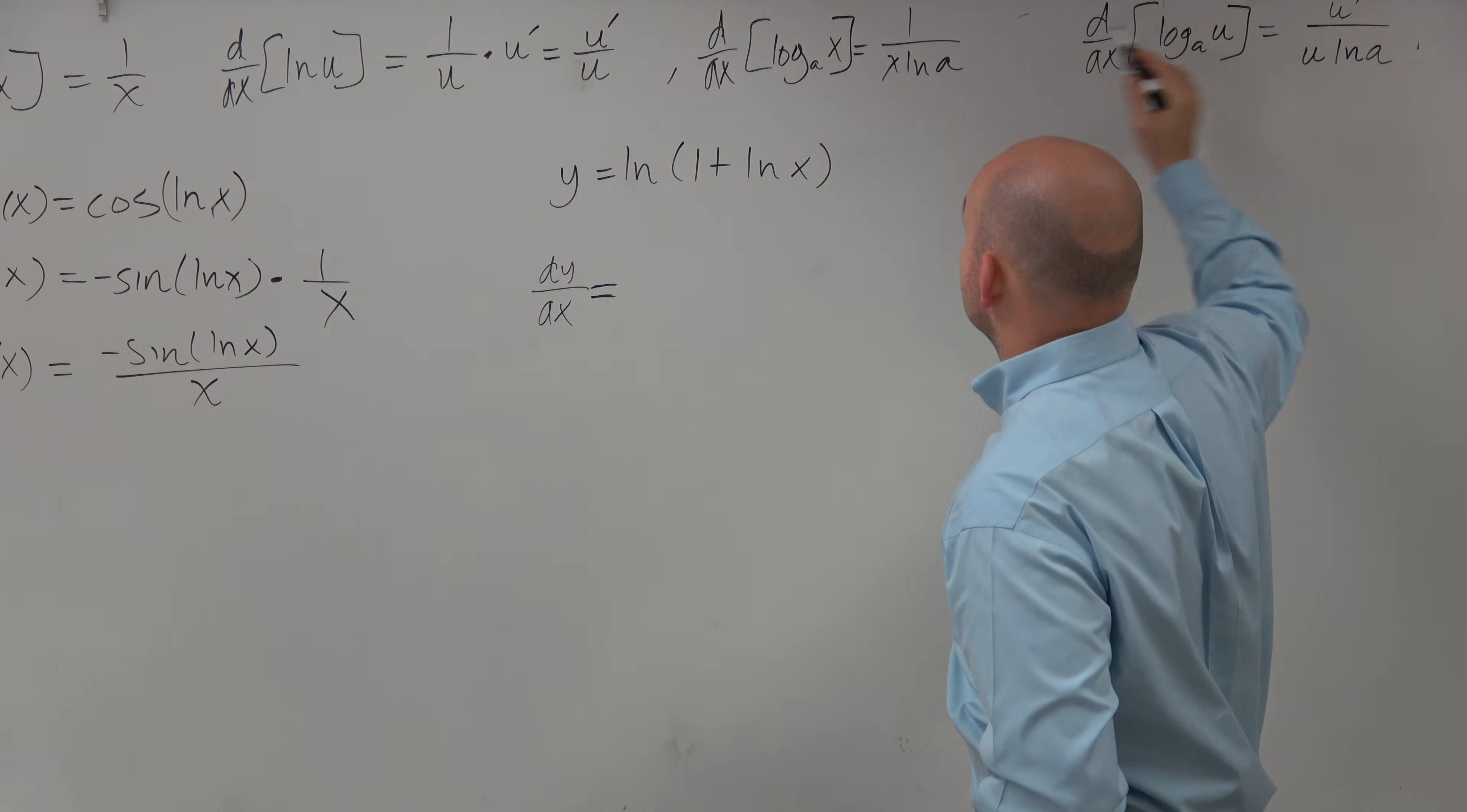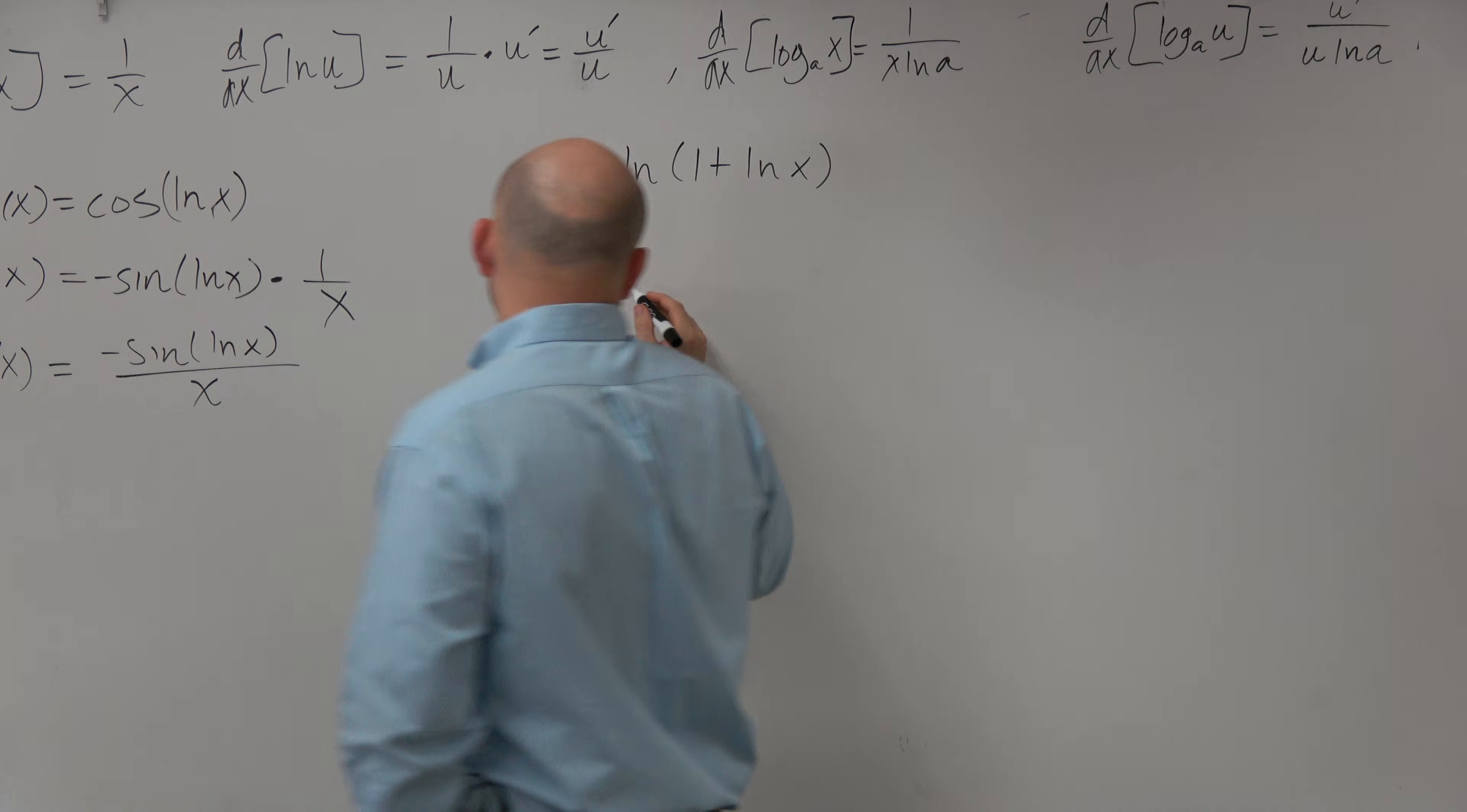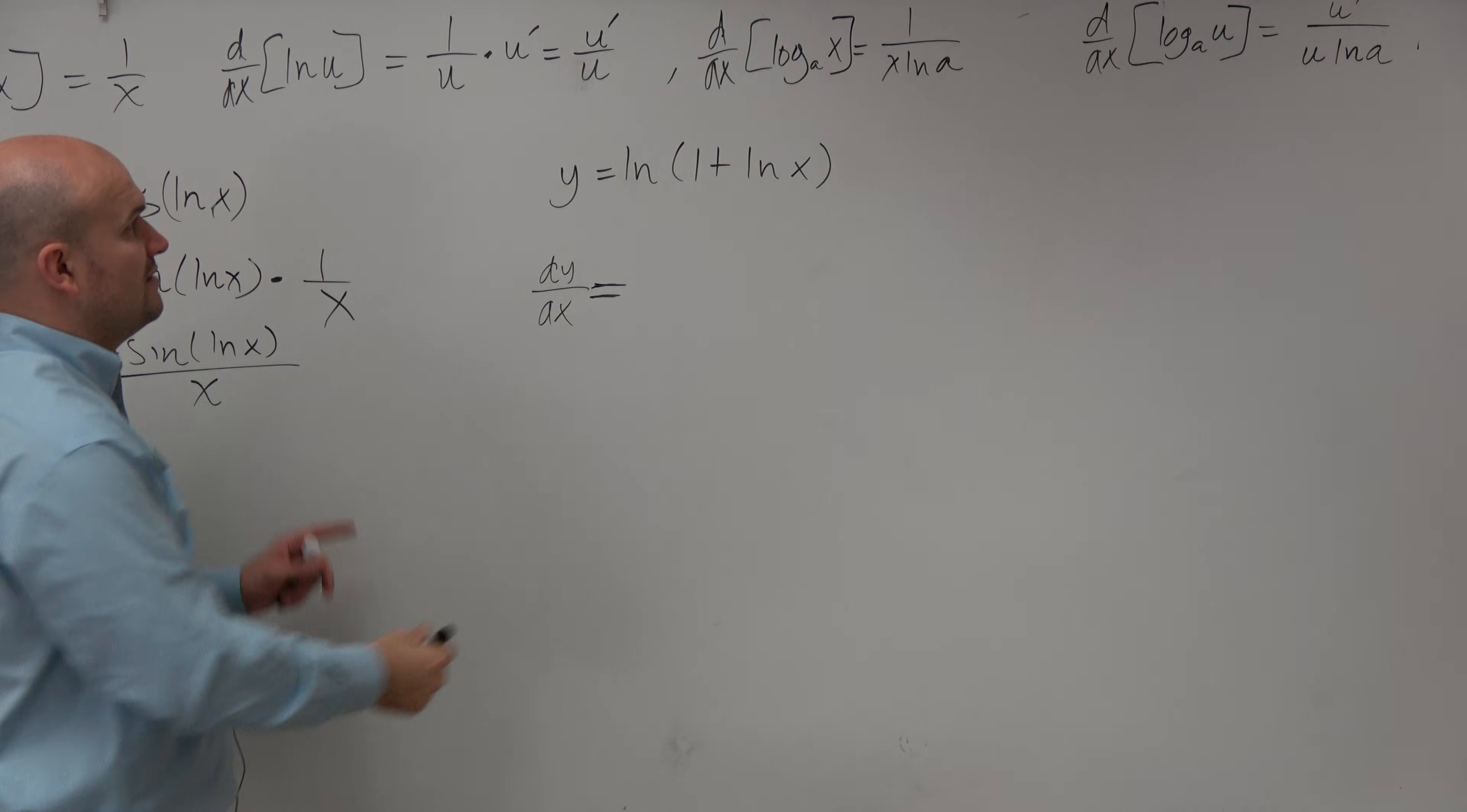I know I can basically just rewrite this as u prime over u. Right? So actually this one might be a little bit easier to write out. Rather than writing it like this, I'm going to break it out.